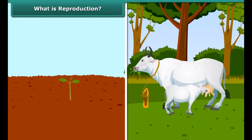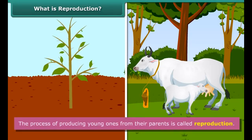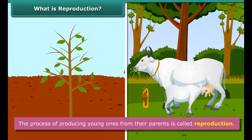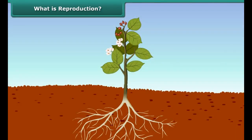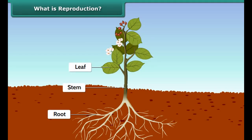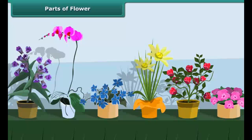What is reproduction? The process of producing young ones from their parents is called reproduction. Most plants have roots, stems and leaves — these are called the vegetative parts of a plant. Flowers are the reproductive parts of a plant. But before studying reproduction in plants, let's recall the parts of a flower.